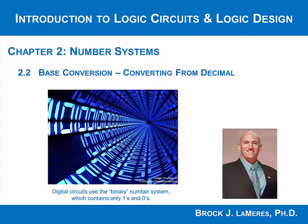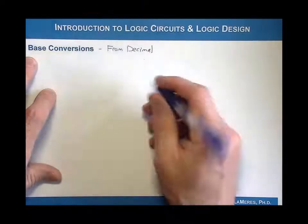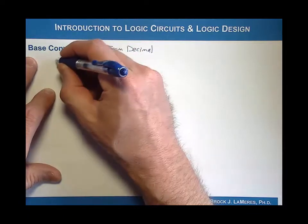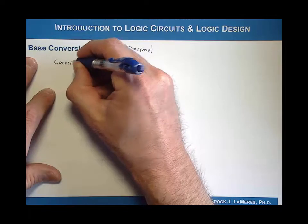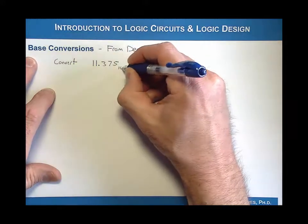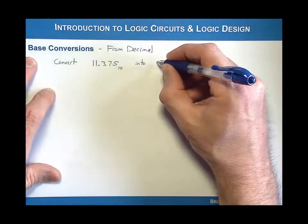Now let's take a look at converting from decimal. This is the algorithm we're going to use to convert any other base into the decimal number system. This is a little different algorithm than what we looked at before converting to decimal, but it consists of two separate parts. The best way to do it is just to start with an example. We're going to treat the whole number portion separate from the fractional portion. Let's do an example where we convert 11.375 base 10 into binary.